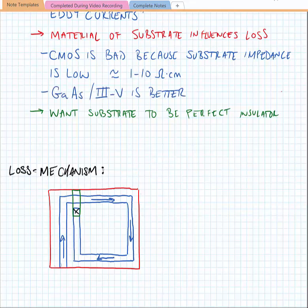If we were to use another material like gallium arsenide or any other 3-5 material, it's typically better because the substrate typically acts as more of an insulator. We want the substrate to be a perfect insulator, and the reason for that is that if it was, no current would flow in the insulator and so no ohmic loss would occur.